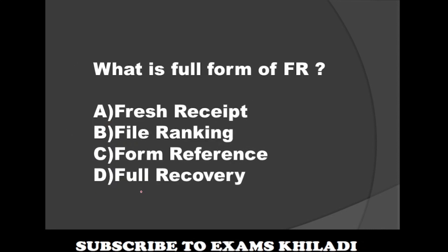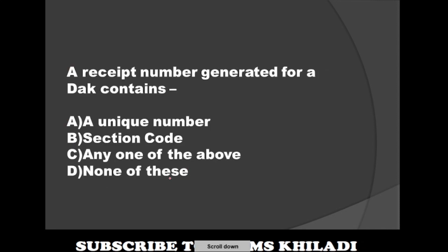Question: What is the full form of FR — as we saw in the starting definitions? Option A: Fresh Receipt. Option B: File Ranking. Option C: Form Reference. Option D: Full Recovery. The correct answer is Fresh Receipt. Next question: A receipt number generated for a DAC contains — Option A: a unique number, Option B: section code, Option C: any one of the above, Option D: none of these. The correct answer is any one of the above.